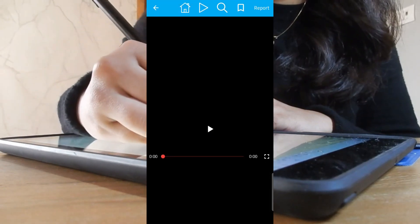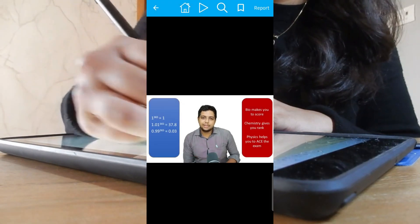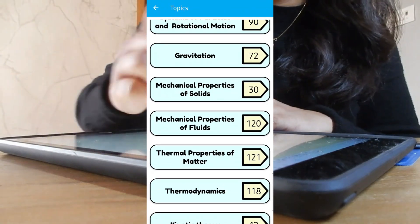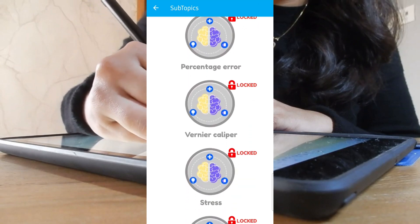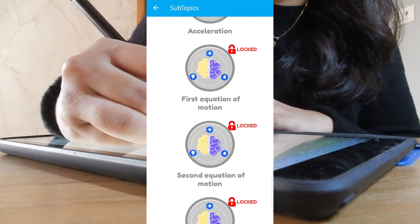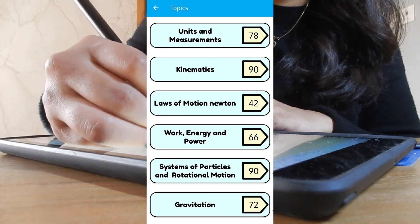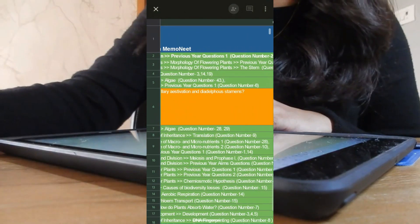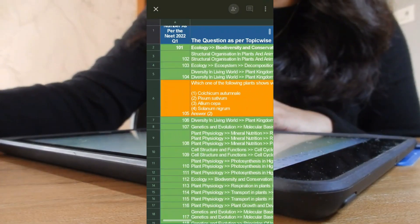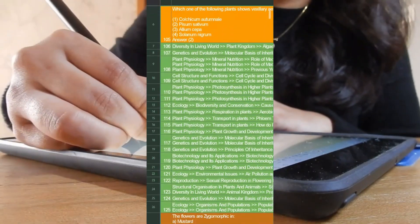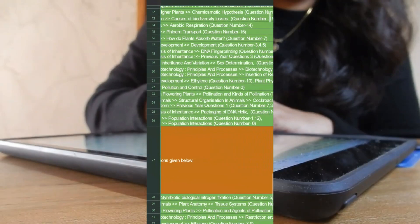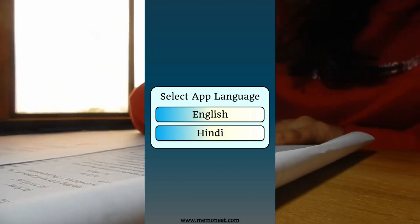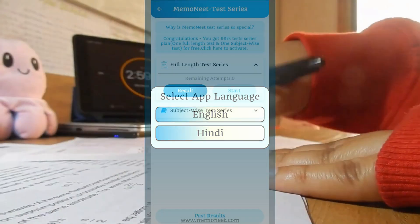Memoneet physics section has video lectures on all important topics and you can find 30+ years of PYQs with video solutions. For each PYQ, two similar PYQ questions were framed to help you recognize and recall the work method. In NEET 2022, 94 out of 100 questions in bio, 42 out of 50 from chemistry, and 30 questions of physics came from the Memoneet app. Questions were either similar or directly came from the app. You can check the proof in the app.